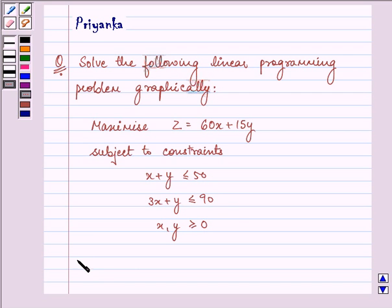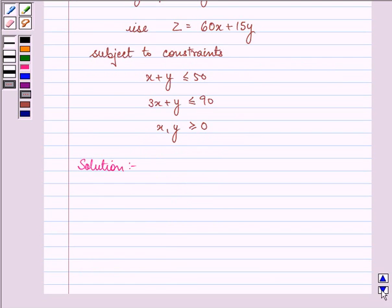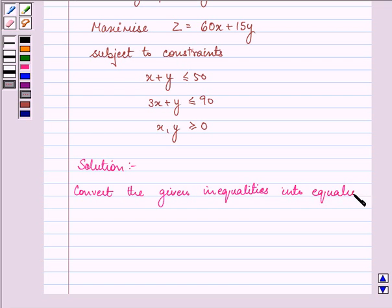Let us proceed with the solution. First, we convert the given inequalities into equations. So we have x + y = 50 and the second one as 3x + y = 90.